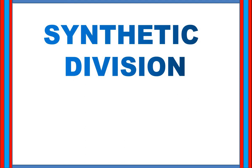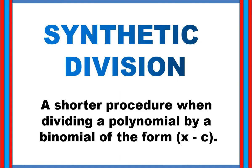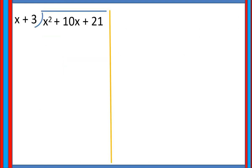Hello everyone, this time we're going to take up synthetic division. What is synthetic division? It is a shorter procedure when dividing a polynomial by a binomial of the form x minus z. For example, x squared plus 10x plus 21 divided by x plus 3. So how are we going to find its quotient using synthetic division?